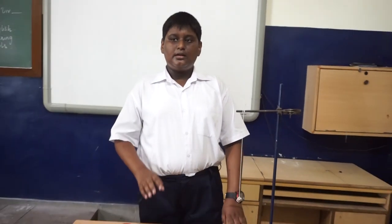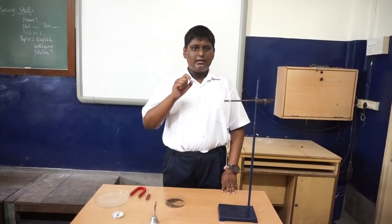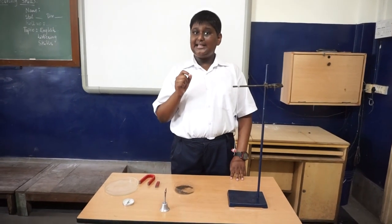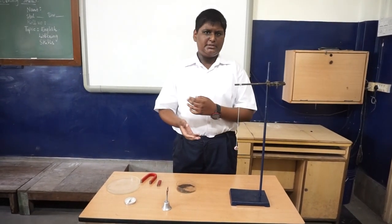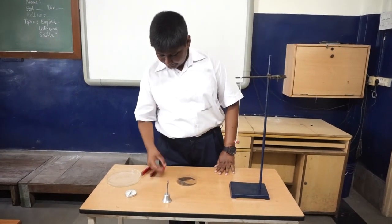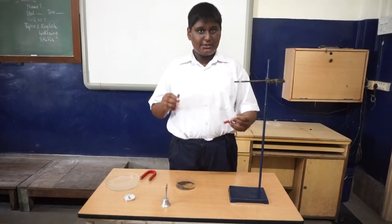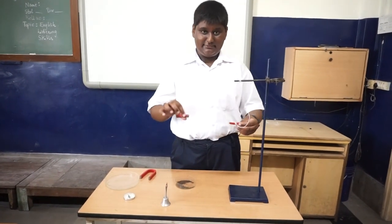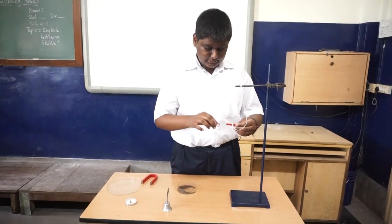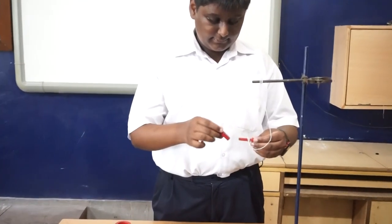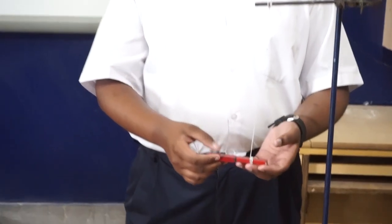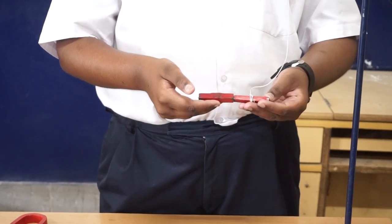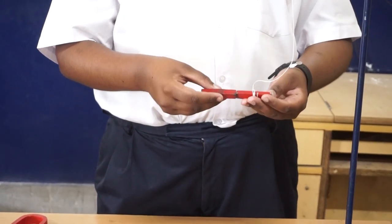So, as we have learned, like poles of a magnet repel each other, and unlike poles attract. Let's demonstrate this together. First, you need to take two magnets. One that is hanging, and one in your hand. You see, both the magnets got attracted. This is because, unlike poles of a magnet attract each other.